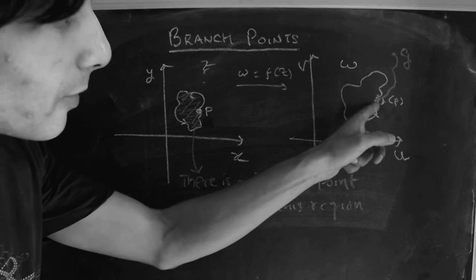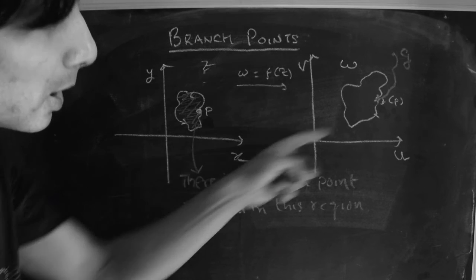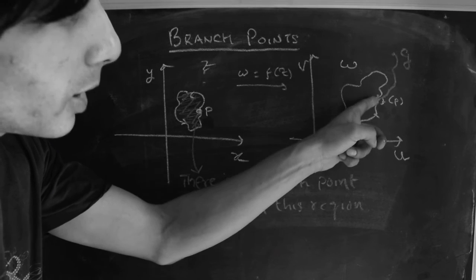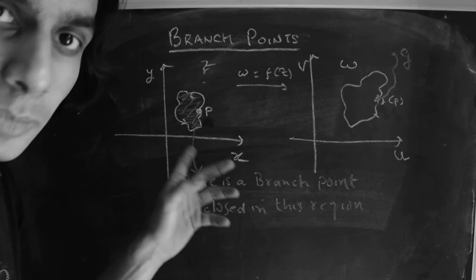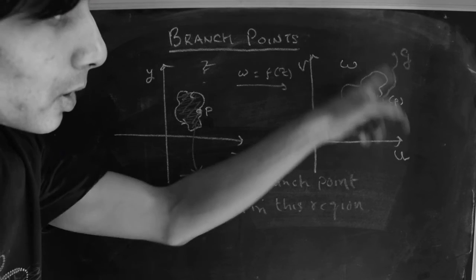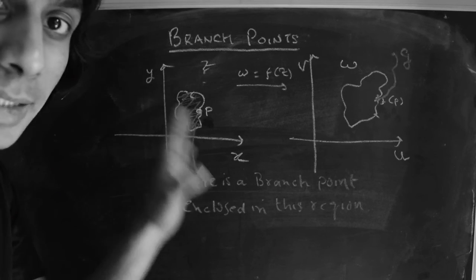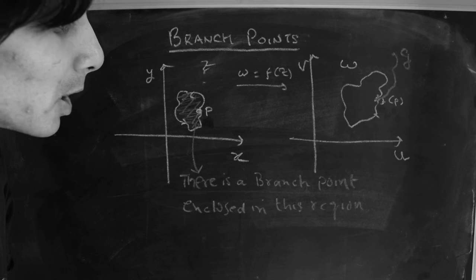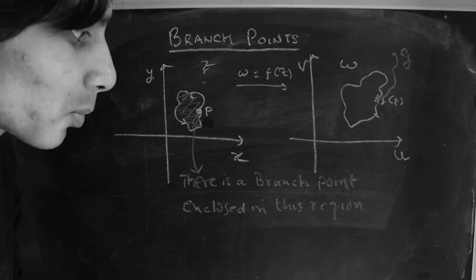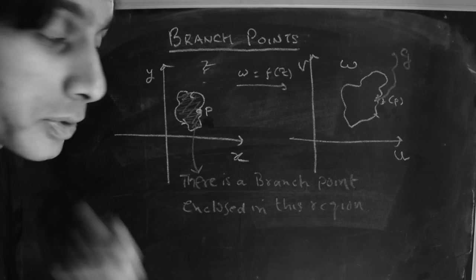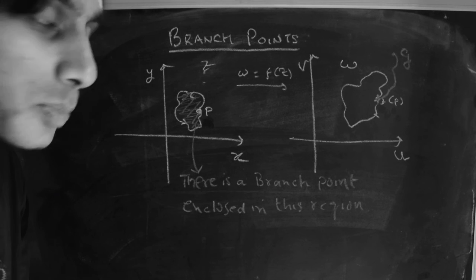To clarify: if as you traverse a closed loop starting at point p and returning to p in the z-plane, you start at f(p) in the w-plane and do return to f(p) after one loop, then there is no branch point enclosed inside this region. This is the geometric way of understanding what's going on when you have a branch point, but it doesn't tell us where the branch point is or how to actually work with these branch points.